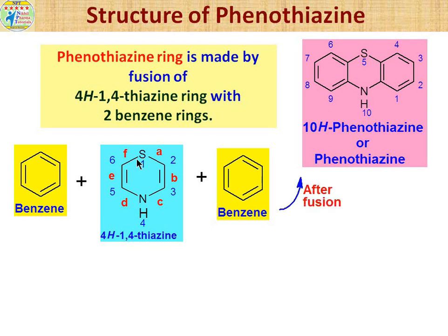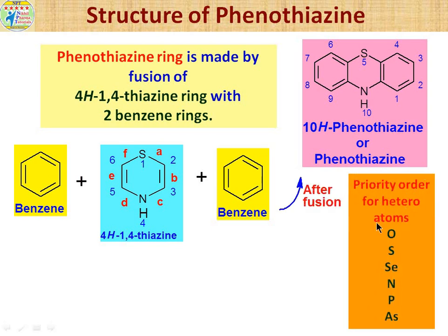Why does numbering start from sulfur? Dear friends, you need to remember the priority order for heteroatoms: oxygen, sulfur, selenium, nitrogen, phosphorus, and arsenic. To remember this, correlate it with the periodic table. Group 16 is the oxygen family: oxygen, sulfur, selenium, tellurium, polonium. Group 15 is the nitrogen family: nitrogen, phosphorus, arsenic, antimony, bismuth. We use the first three elements from each family in this priority order.